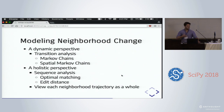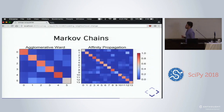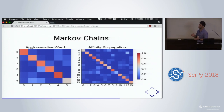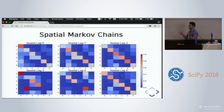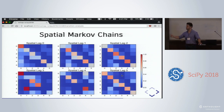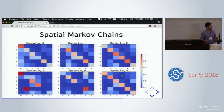Once we have a string of neighborhood types, we need to model them. One approach is dynamic, looking at spatial Markov chains: for any given neighborhood, you look at the likelihood it changes into a different type over time. A simple Markov matrix shows a strong diagonal — neighborhoods tend to stay their own class. But we can also condition that transition on who's around you. These heat maps show that if you condition on neighbors, you end up with different likelihoods — so if you ignore spatial dependence, your models are going to be wrong.